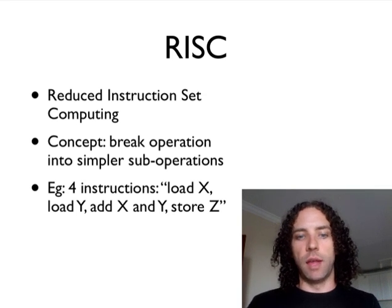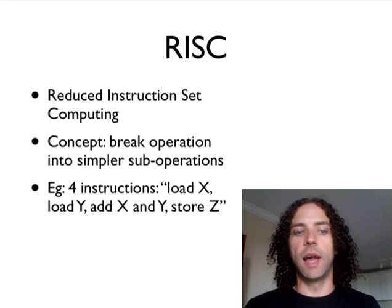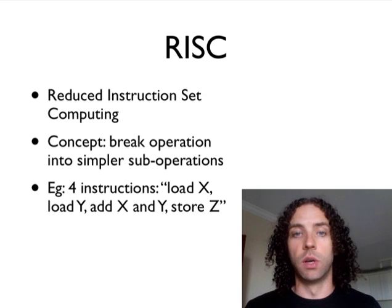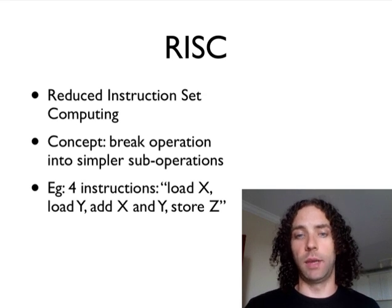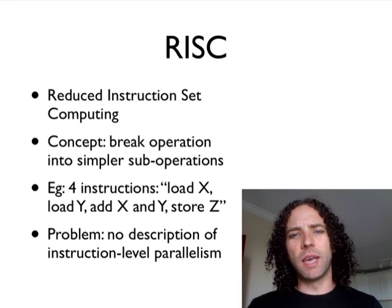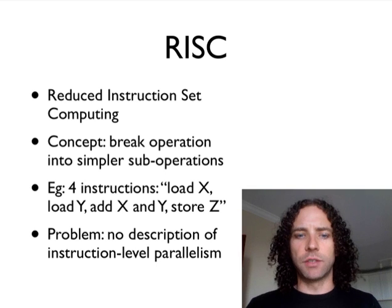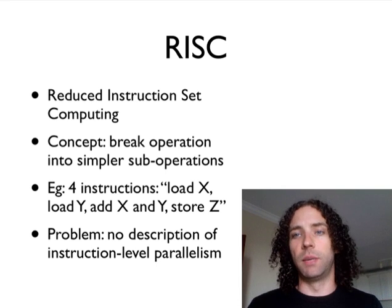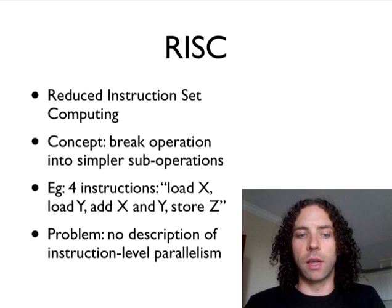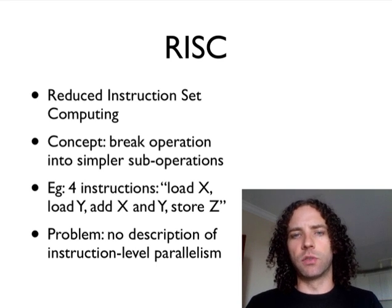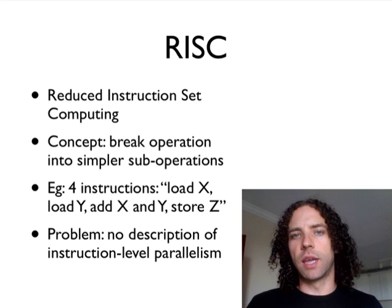The earlier example in RISC terms would mean: load X, load Y, add X and Y, and then store the result into Z. This would be four instructions on the RISC processor, and on something like a PowerPC, this is exactly what you'd see. The problem with this is there's no description of instruction-level parallelism. Over time, as CPUs got faster, different instructions started taking different amounts of time; memory became further away and slower compared to the CPU, so memory operations became a real bottleneck. But we also started realizing you could actually fundamentally do a bunch of these instructions in parallel, so the RISC chips started having to figure this out so they could execute them at the same time.